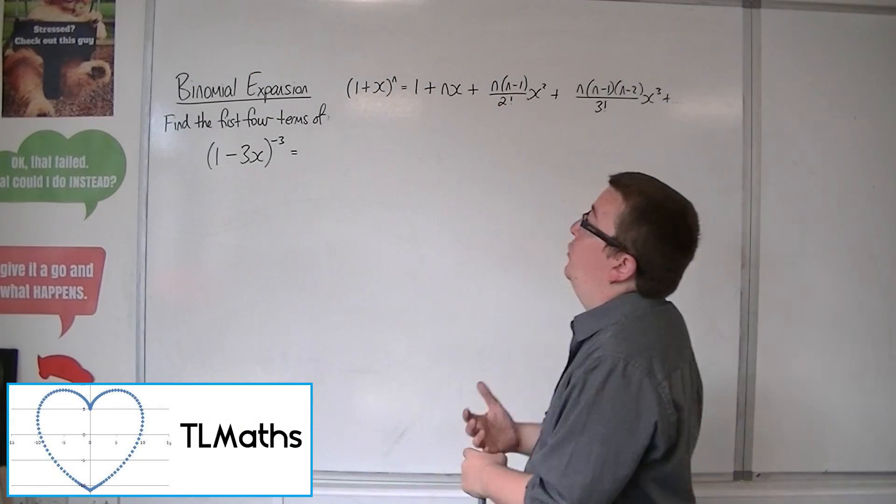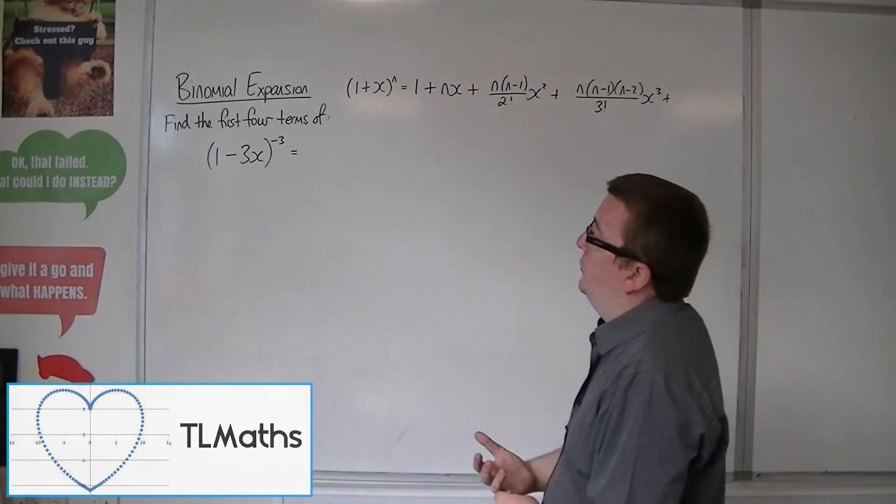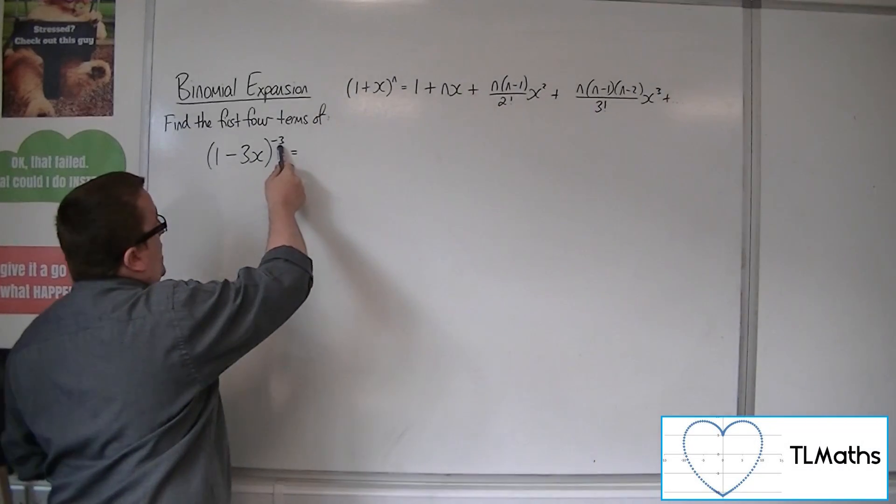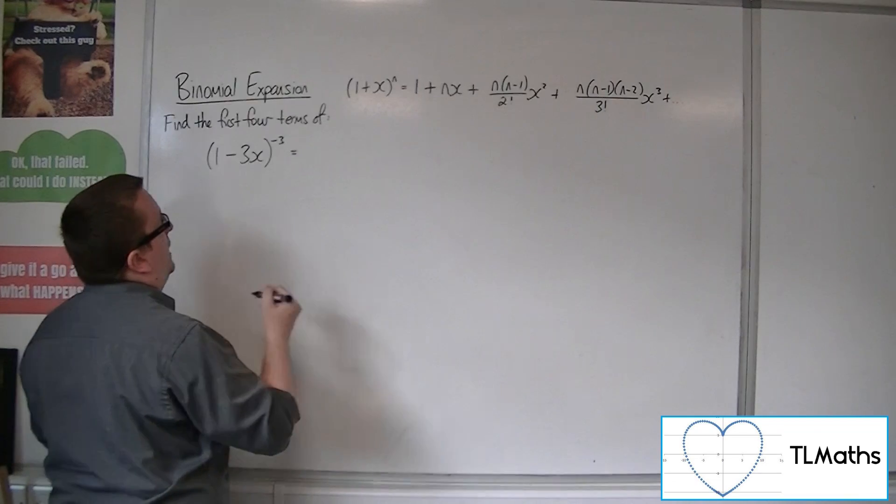Let's say I now want to expand (1-3x) to the minus 3. So the n is going to be replaced with minus 3, the x is going to be replaced with minus 3x.